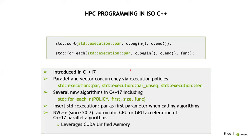C++ standard parallelism was introduced in C++17. It recently saw an extension in C++20, the most recent version of the standard, and more features are coming in the pipeline for the future C++23 and onward. And as Jeff mentioned in our overview talk, this has been a very important feature in the standard and it has been an investment over many years.